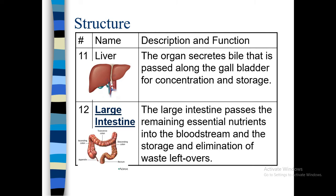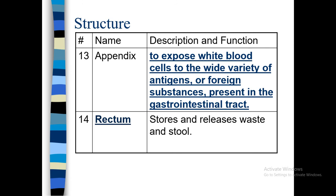The large intestine has different types of colon sections: ascending colon, transverse colon, descending colon. It also includes the appendix and rectum. The appendix exposes white blood cells to a wide variety of antigens and foreign substances present in the gastrointestinal tract. The rectum stores and releases extra waste food and waste products. This is the appendix, large intestine, and small intestine.